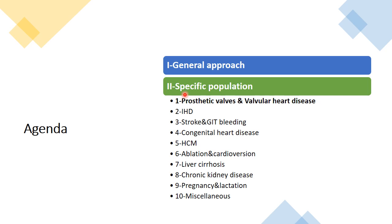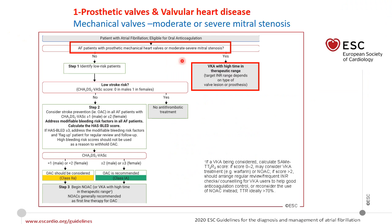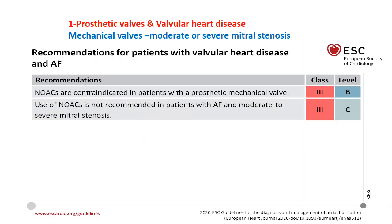For specific populations, starting with prosthetic valves and valvular heart disease: patients with prosthetic mechanical heart valves or significant mitral stenosis should receive vitamin K antagonists regardless of CHA₂DS₂-VASc score, and there is no role for NOACs in these patients. NOACs are contraindicated in patients with prosthetic mechanical valves and are not recommended in AF with moderate to severe mitral stenosis — defined as mitral valve area 1.5 cm² or less.